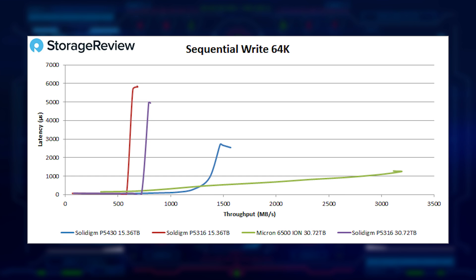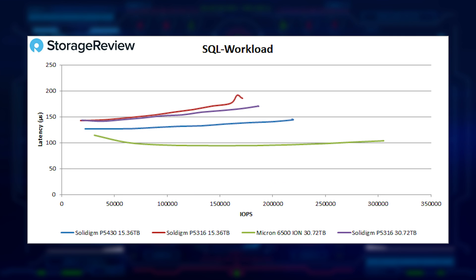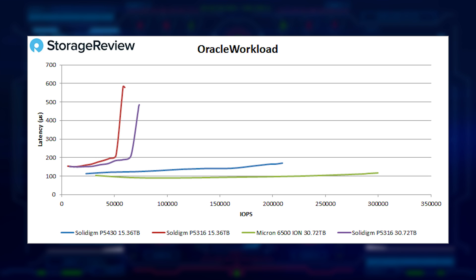Switching over to 64K writes, the P5430 shows a much better performance profile than the prior drives, actually hanging at a lower latency than the Micron drive for a period — although clearly TLC NAND is superior in that particular workload. Looking at the mixed workload SQL chart, the P5430 again outshines and outclasses the P5316 and hangs pretty well with the TLC competitor. The same is true for Oracle workloads, where the P5430 shows great strides and keeps a tight chart next to the 6500 ION.